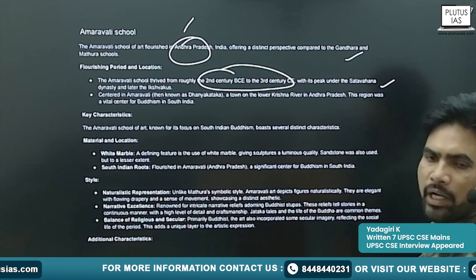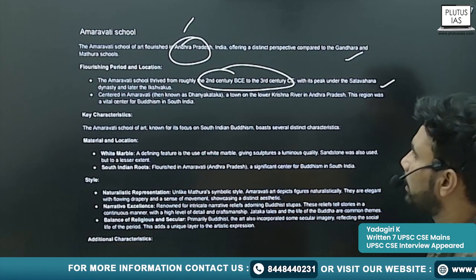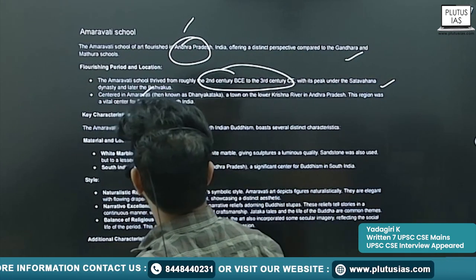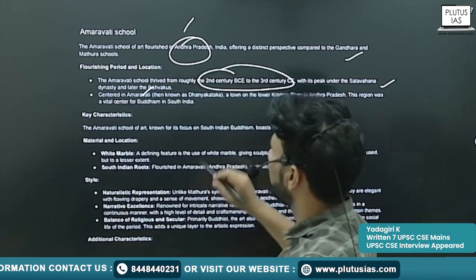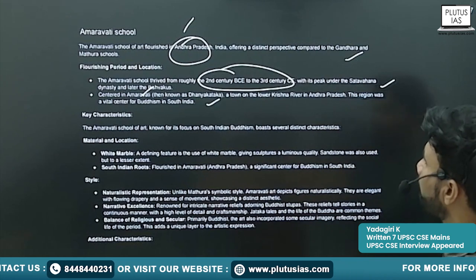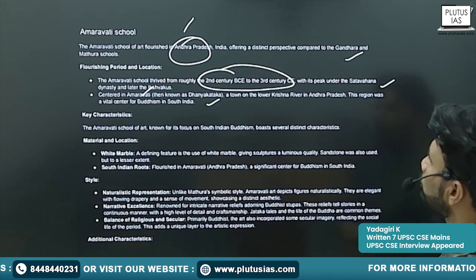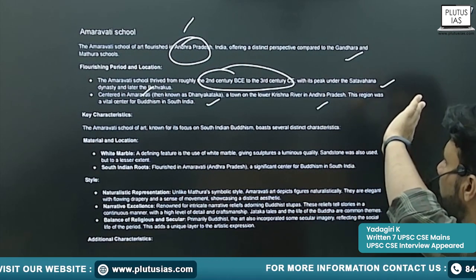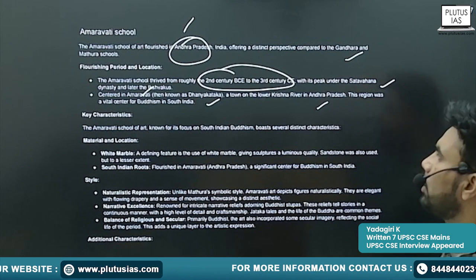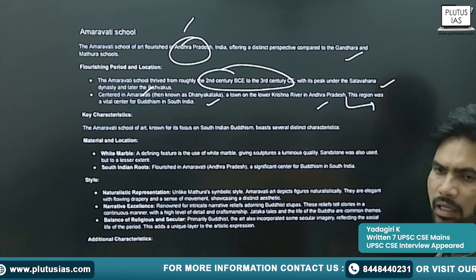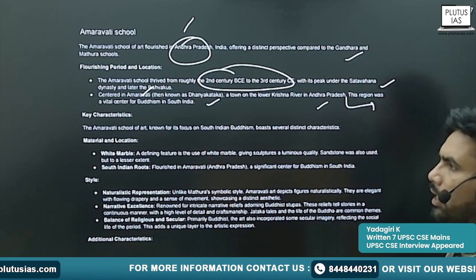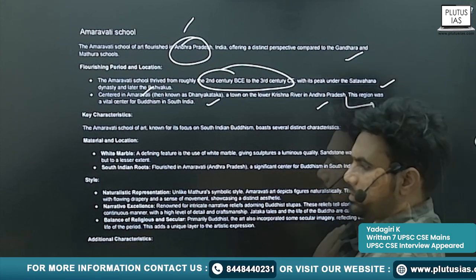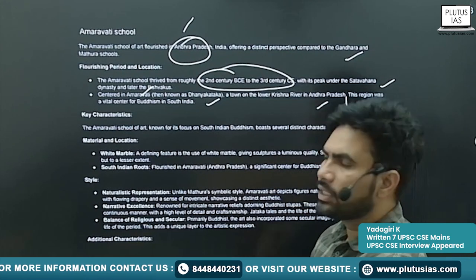It is centered in Amaravati, which was earlier known as Dhanyakataka — a town in the lower Krishna River in Andhra Pradesh. It was the later capital of the Satavahanas.